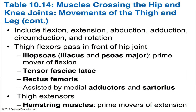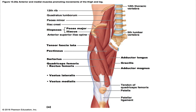Looking at the iliopsoas muscle, it's made up of the iliacus and psoas major. Their fibers pass under the inguinal ligament and insert by a common tendon on the femur. The iliacus is the more lateral, large fan-shaped muscle. Its origin is the iliac fossa and crest and the ala of the sacrum, and its insertion is the lesser trochanter of the femur via the iliopsoas tendon. The iliopsoas is the prime mover for flexing the thigh, or for flexing the trunk on the thigh as when bowing, and it's innervated by the femoral nerve, L2 and L3.